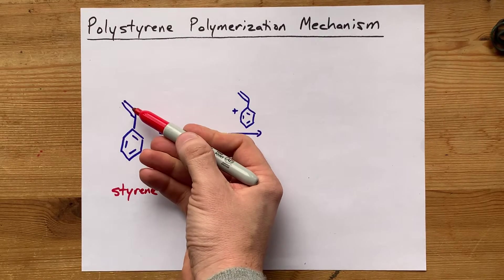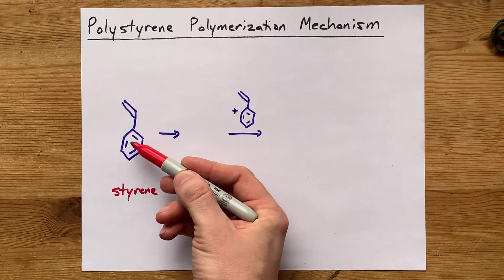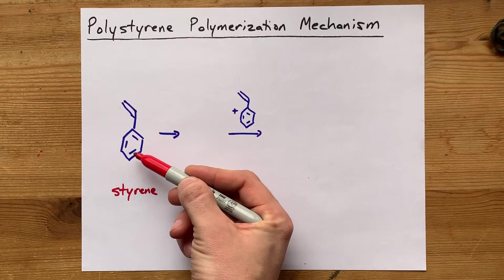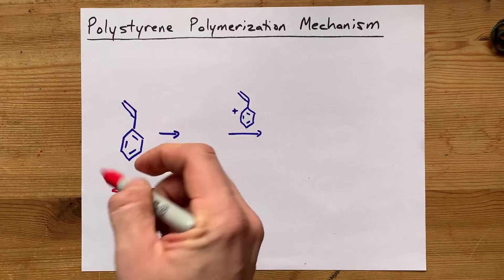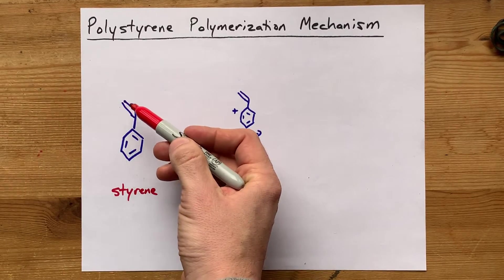We have a double bond here on this alkyl group, and we have what look like double bonds on this benzene. But there's resonance here. These double bonds are more stable than this one.